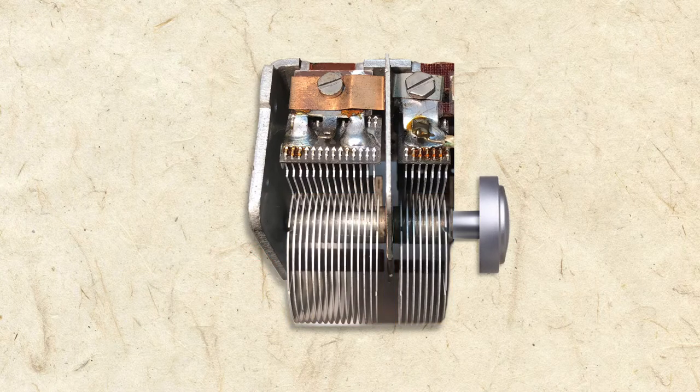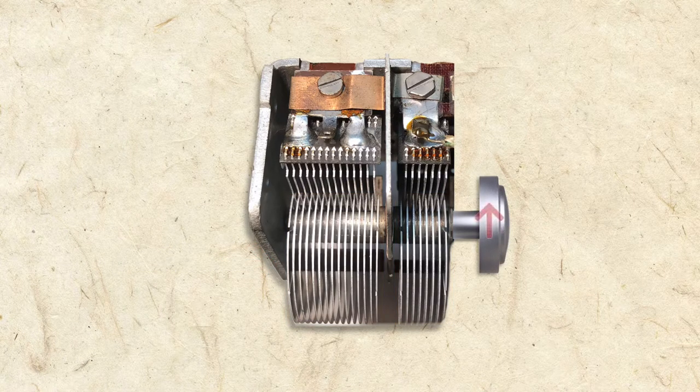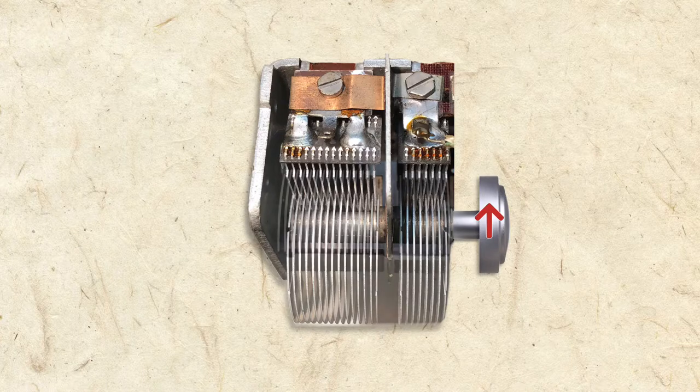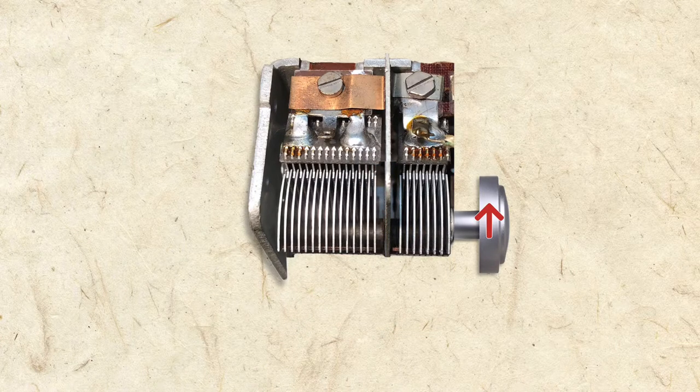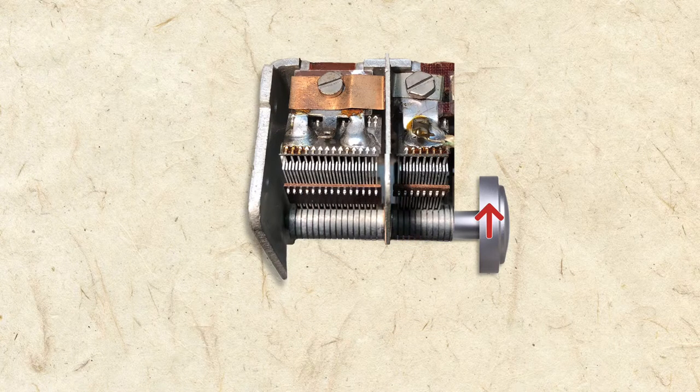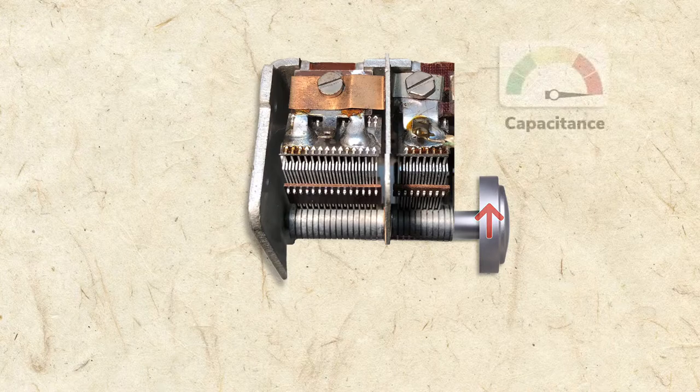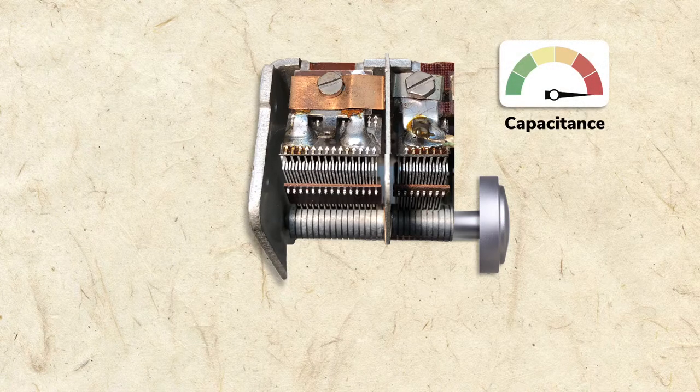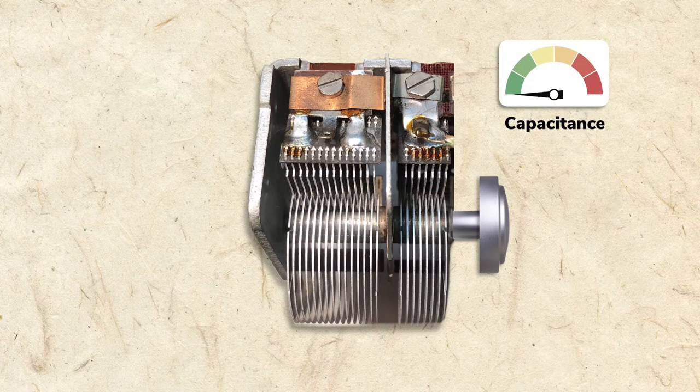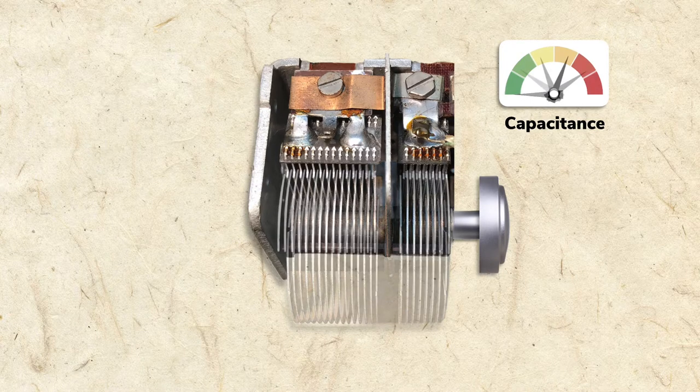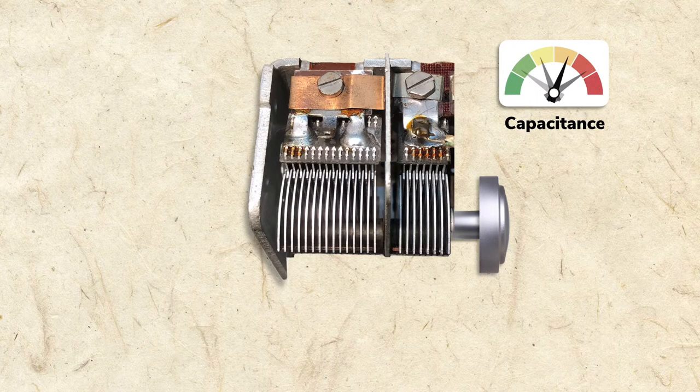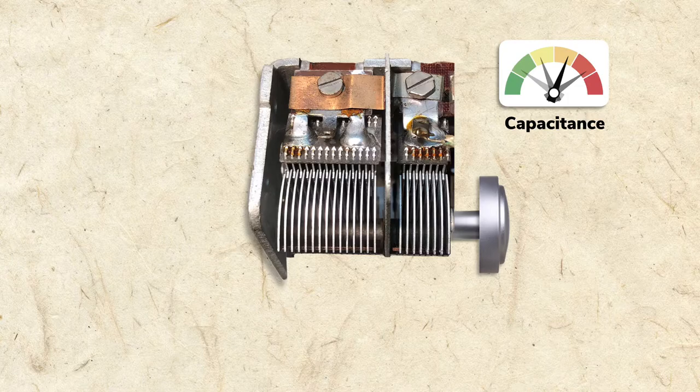The radio's tuning knob is connected to the shaft. As the shaft turns clockwise, the rotor plates gradually come closer and closer to the stator plates. This is called meshing. When the rotor and stator plates are fully meshed, capacitance is greatest. When they're unmeshed, capacitance is lowest. And at points in between, capacitance varies incrementally between high and low.